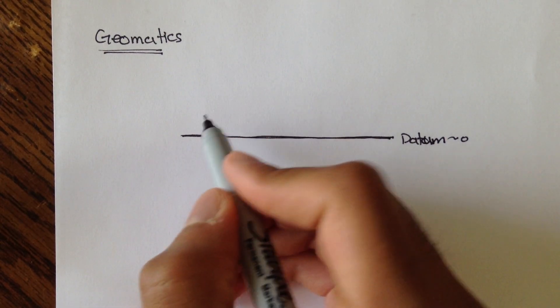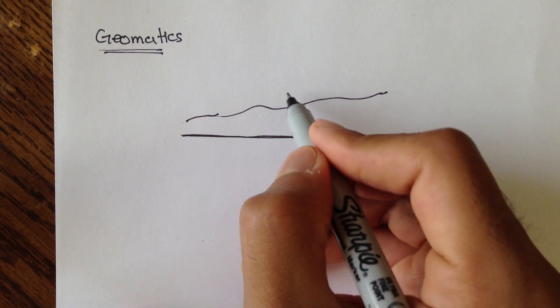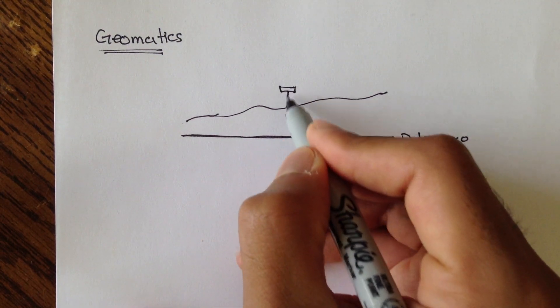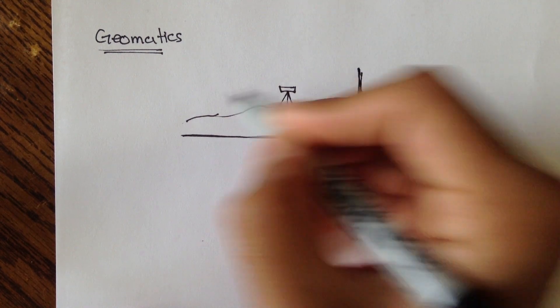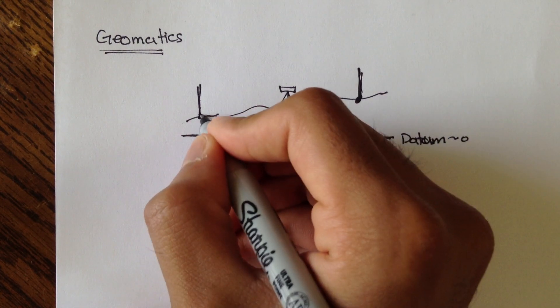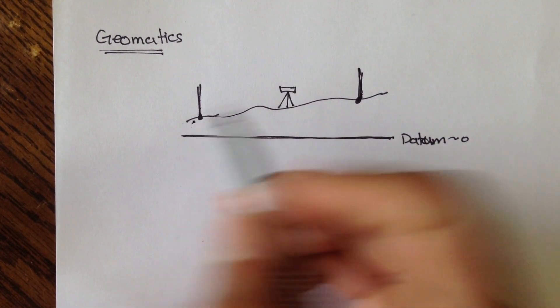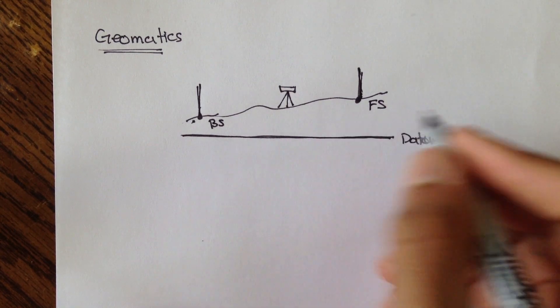And then we'd have our ground or surface that we were measuring from. We'd set up our instrument somewhere in the middle of these two rods, which represented the foresight and the backsight. So I'll call this BS, and I'll call this FS for backsight and foresight.